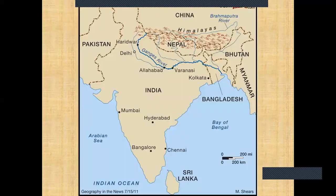The first river you can see in the map is River Ganga. The origin of the Ganga River is the western Himalayas in the state of Uttarakhand. It flows south and east through the Gangetic Plains of North India into Bangladesh, where it empties into the Bay of Bengal. In Bangladesh, River Ganga is known as River Padma.